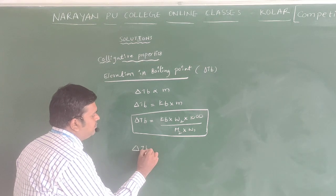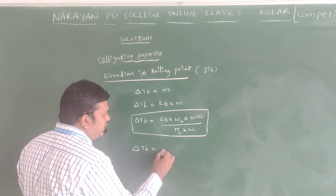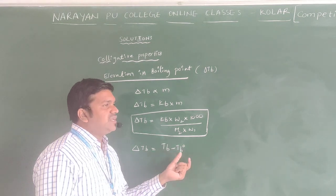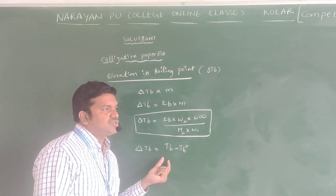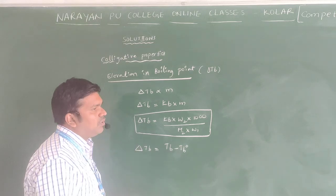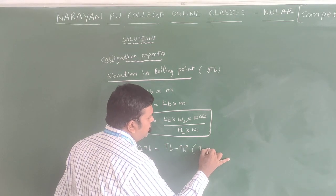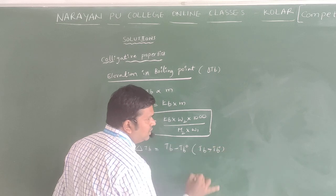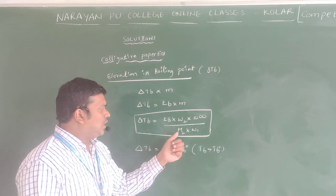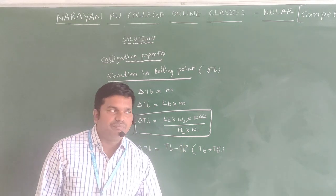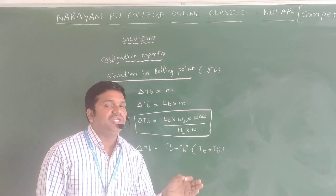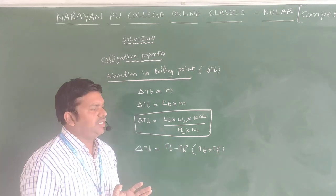Delta Tb equals Tb minus Tb0, meaning the difference between the boiling point of the solution and the boiling point of the pure solvent is called Elevation in Boiling Point. Generally Tb is always greater. W2 is the weight of the solute, M2 is the molecular mass of the solute, and W1 is the weight of the solvent. Molality is the number of moles of solute per kilogram of solvent.